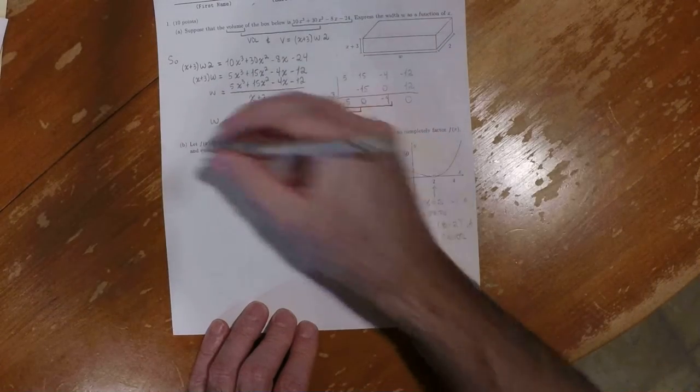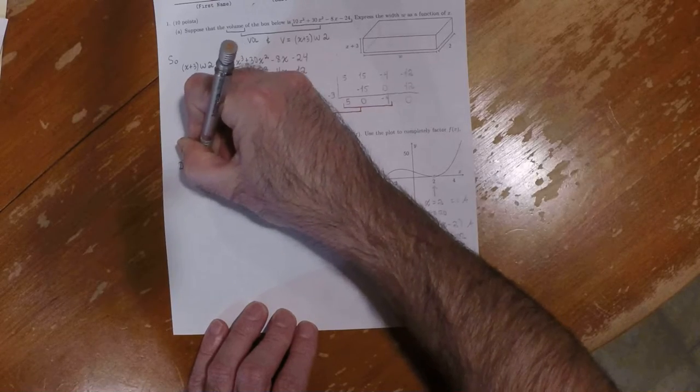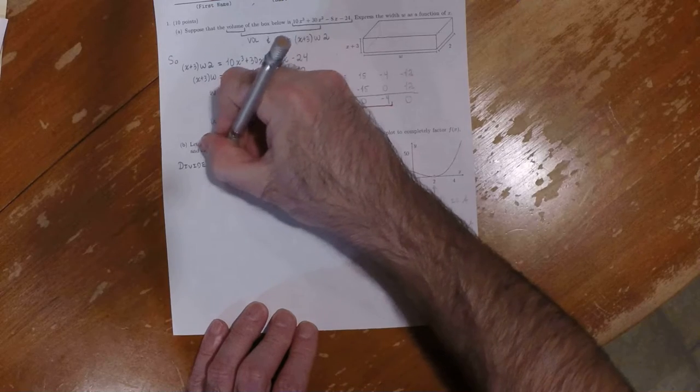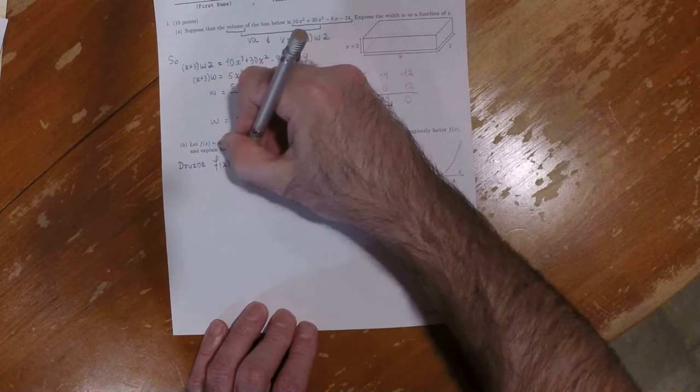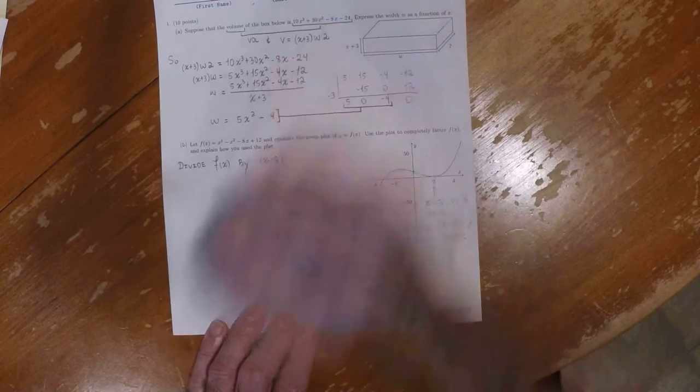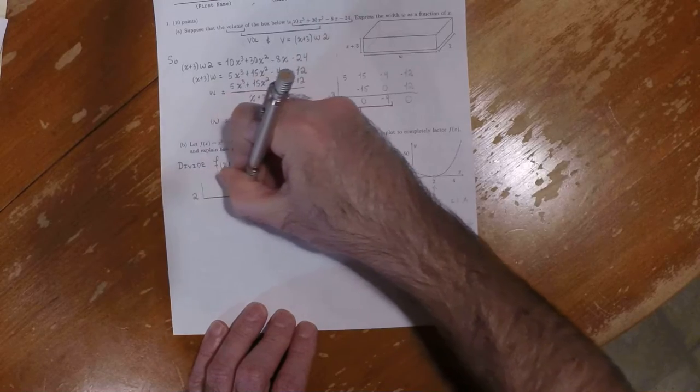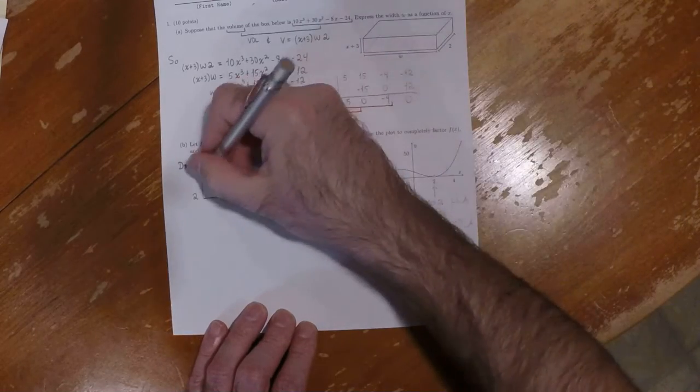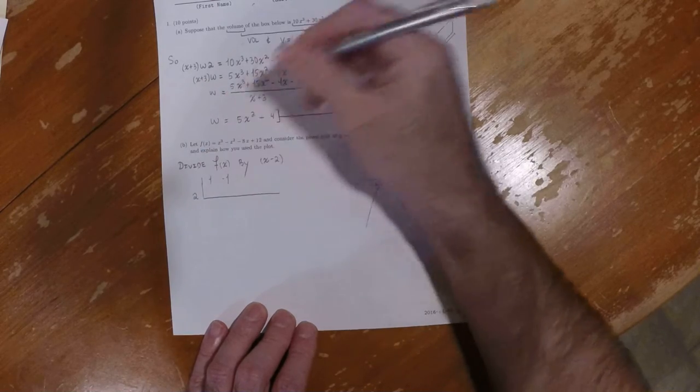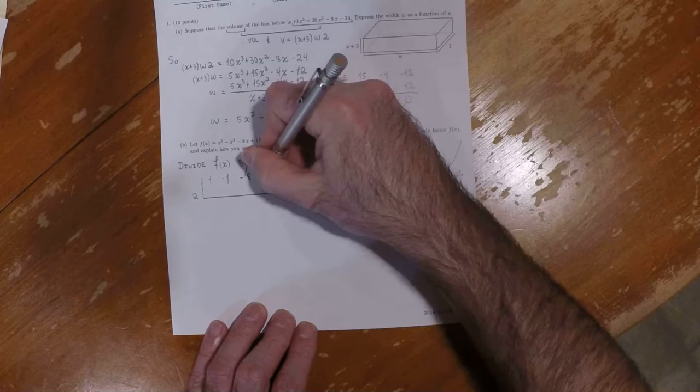We'll divide f of x by x minus 2, since it's known to be a factor. And we'll do it with synthetic division. So 2 is guarding the door, and the coefficients are 1, negative 1, negative 8, and 12.